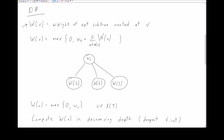In order to develop our recursion, we note that if we look at a particular node V, we have two choices. We can choose to say that the optimal subtree at this node is the empty tree, which has a value of zero. Alternatively, we can choose to have a non-empty tree, in which case we must include node V, giving us a weight of W(V), and then we include the weight of the optimal subtree for every ancestor of V.